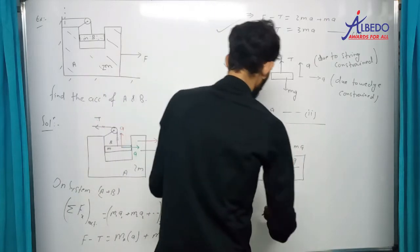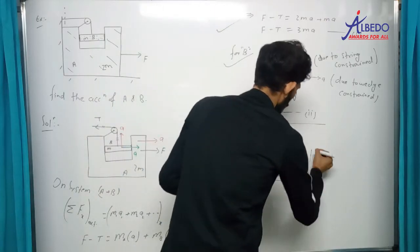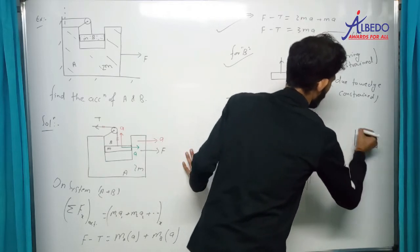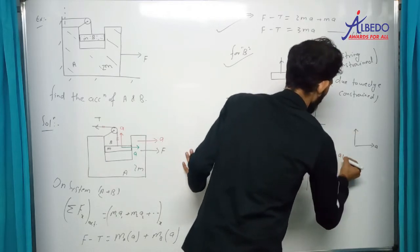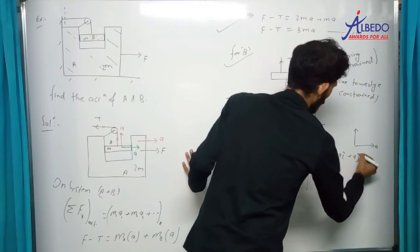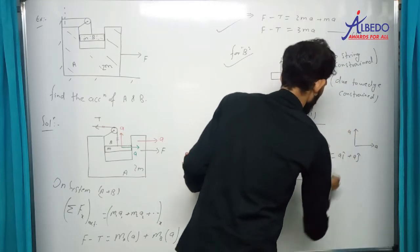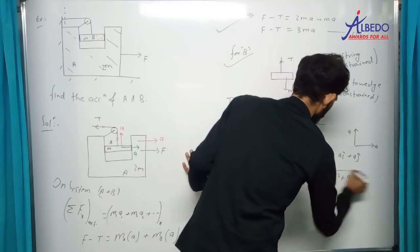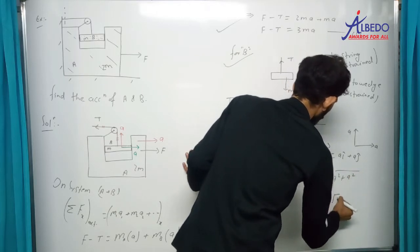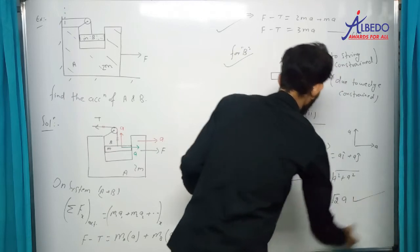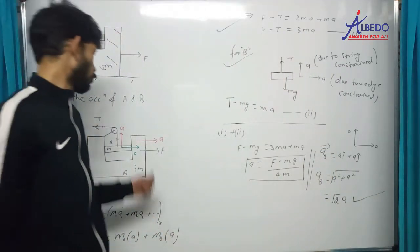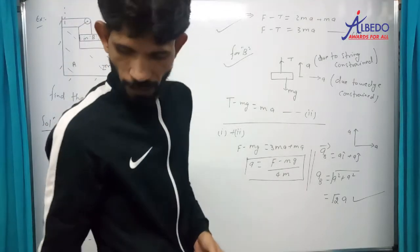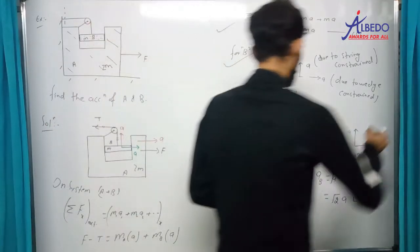लेकिन अगर आप acceleration of B की बात करोगे, तो वो आएगा a i-cap and a j-cap भी. तो acceleration of B = √(a² + a²) = √2 · a. कई बार लोग सब कुछ करने के बाद यह गलत कर जाते हैं — दोनों accelerations a को net मिलाकर root 2. And this is the net acceleration of B.